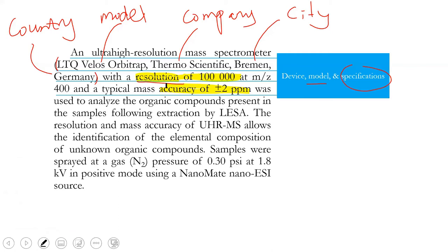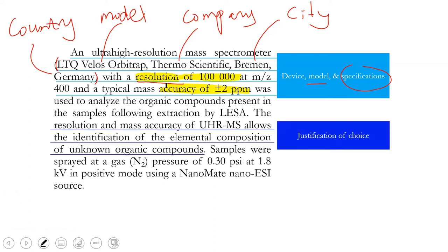You don't have to list the other specs like how heavy it is, the weight, the size, the height. No, those are irrelevant because it doesn't matter that much. The most important parameter is resolution and accuracy. That's why you need to measure them because they may affect the readout. There's also justification here. The resolution and accuracy allowed. That's why you choose this device.